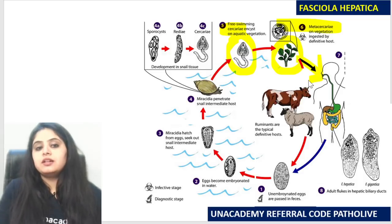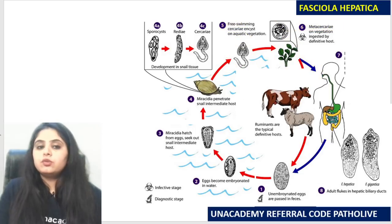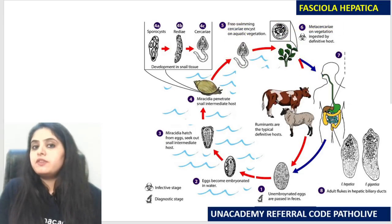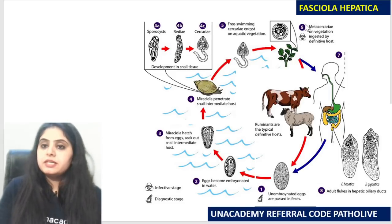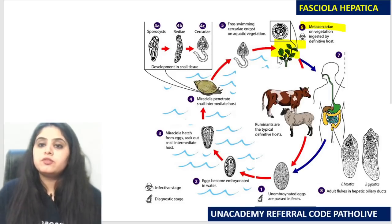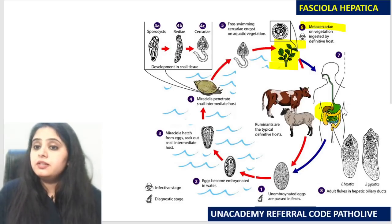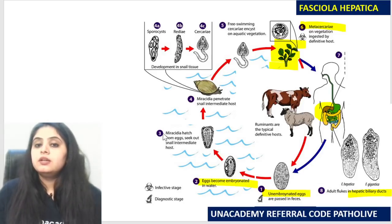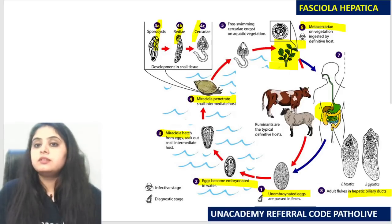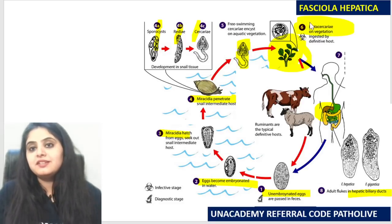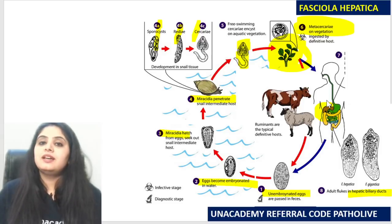The cercaria larva goes into the aquatic plants and becomes the metacercaria larva, which is what infects us. Quick recap: metacercaria from aquatic plants → adult worms in the hepatic biliary system → unembryonated eggs passed → become embryonated → miracidium hatches → goes to snail → CRC development → cercaria comes out → goes into aquatic plants → metacercaria formed. Life cycle complete.